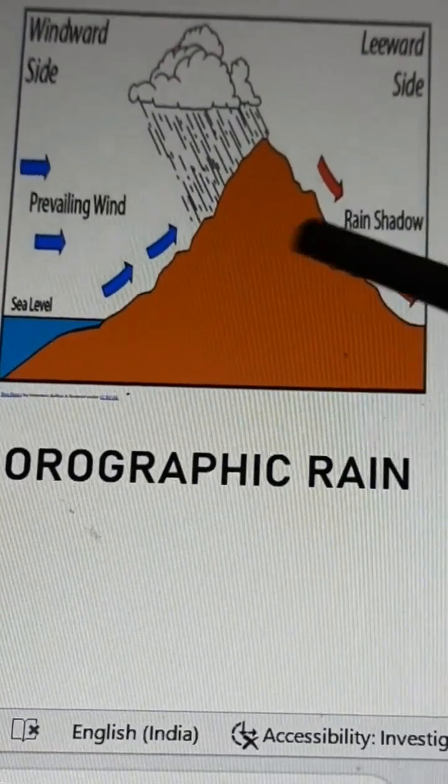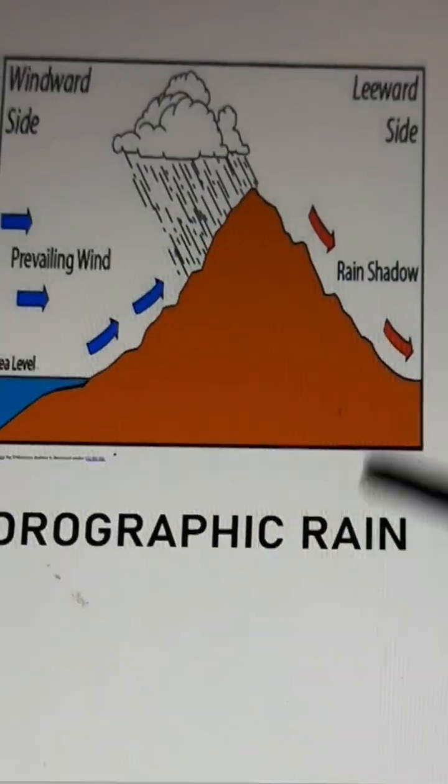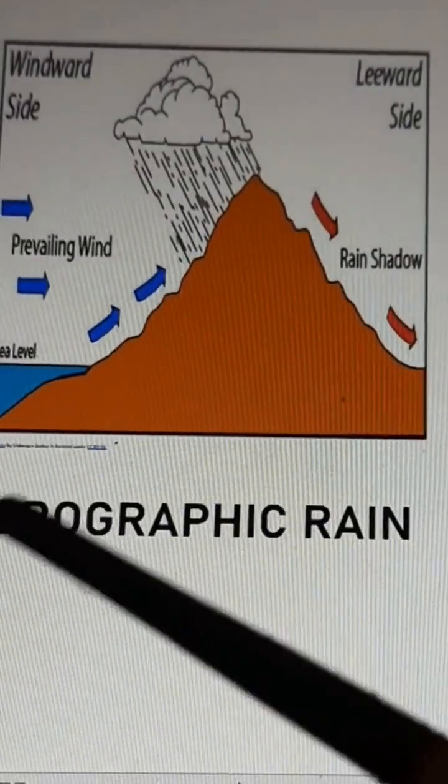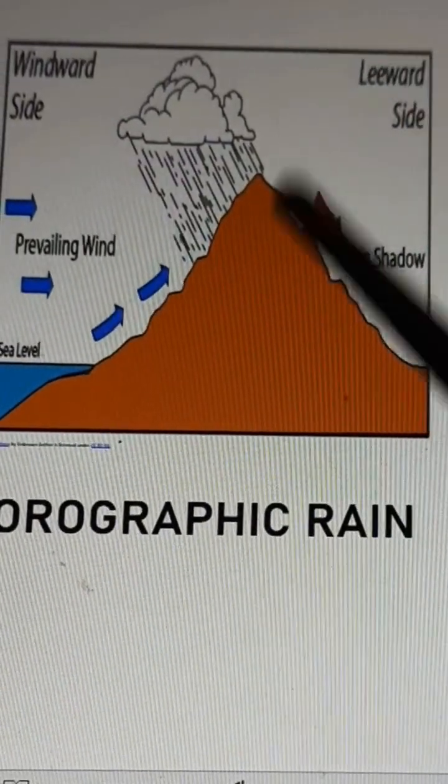A good example of orographic rainfall is Mahabaleshwar, where heavy rainfall takes place, while in Pune there is very scanty rain.